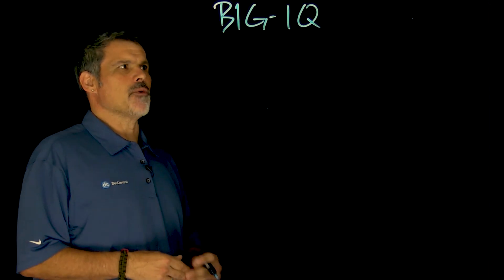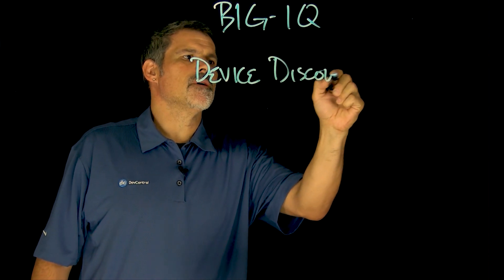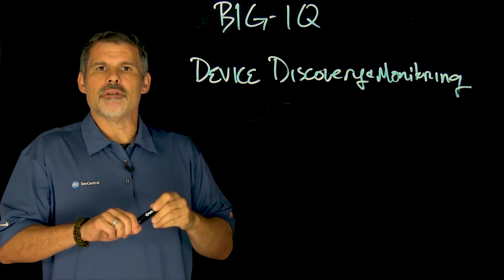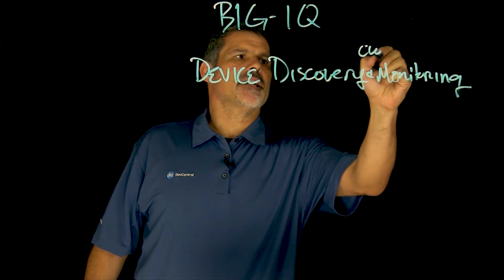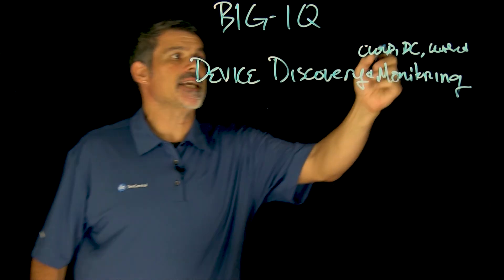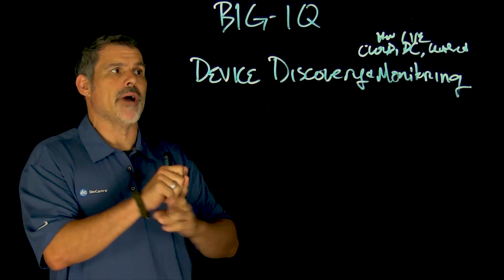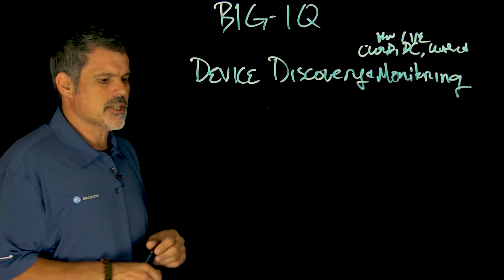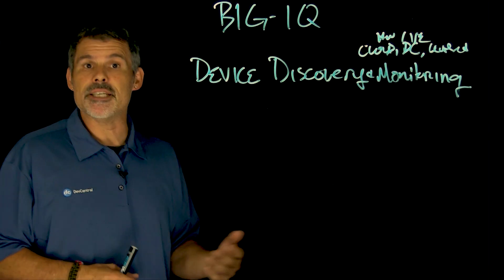The first feature right out of the box with Big IQ is device discovery and monitoring — being able to discover and manage all of your Big IP devices no matter where they reside. They can be in the cloud, in a data center, in leased space, on a raised floor, wherever. It can be either hardware or a virtual edition. You might have Big IPs in AWS, in your private data center, or in your Colo facility. It'll do things like checking CPU, disk space, and availability.